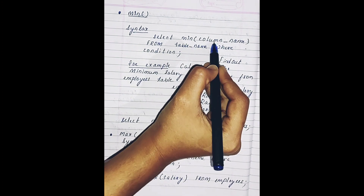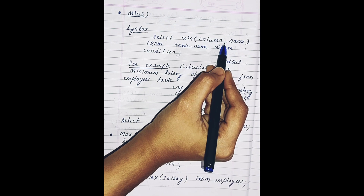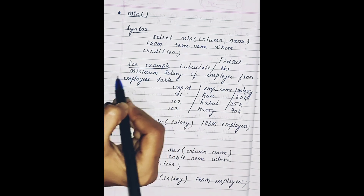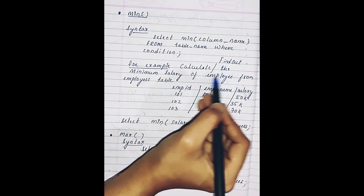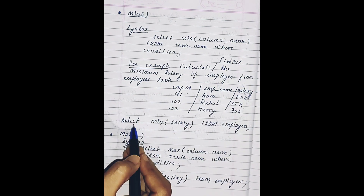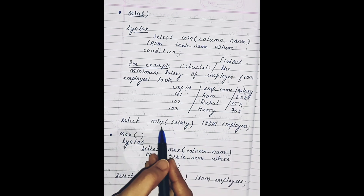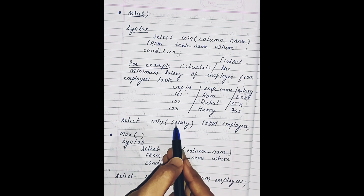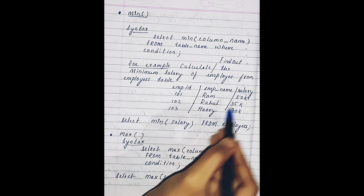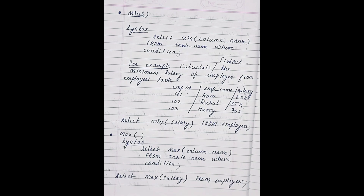The syntax is: SELECT MIN(column_name) FROM table_name WHERE condition. For example, to find the minimum salary of employees from the employee table, the query will be: SELECT MIN(salary) FROM employees. It will search the salary column and return the smallest record among all the records.